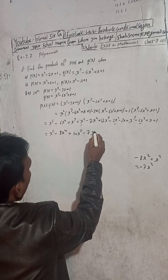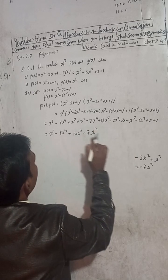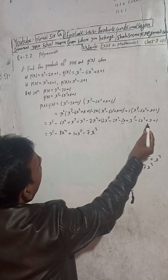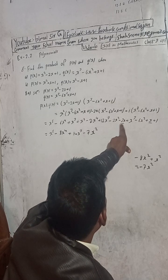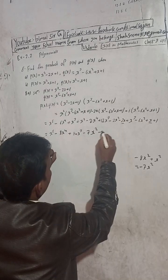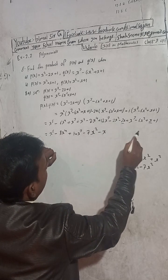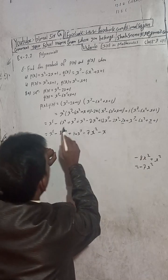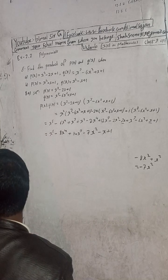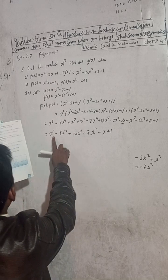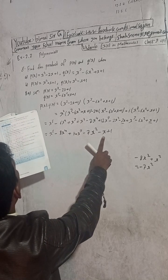Minus one x squared, minus 2x squared, minus 2x, then the x squared, minus 4x. Combining constant and like terms, the solution is: x to the power 5, minus 8x to the power 4, plus 14x cubed, minus 7x squared, minus x plus 1.